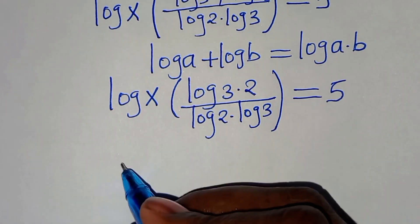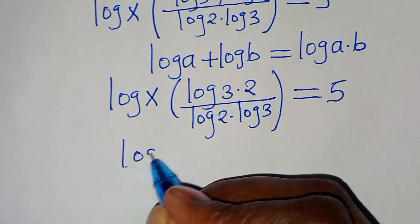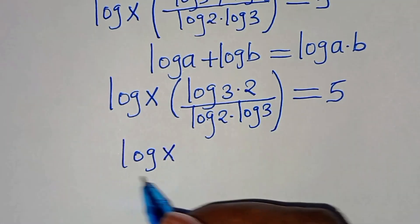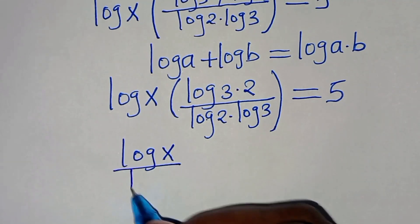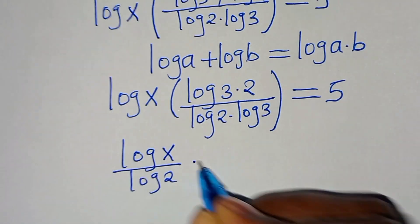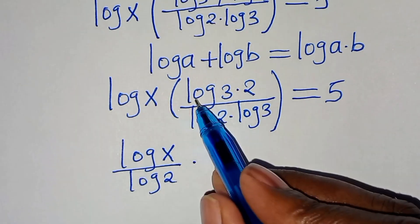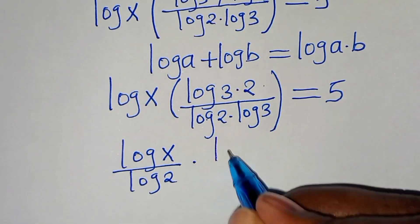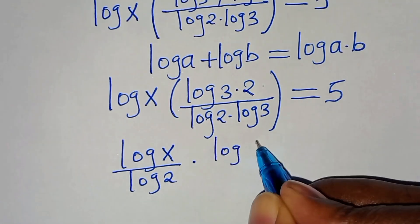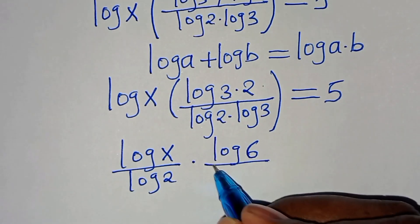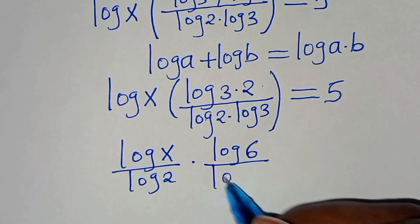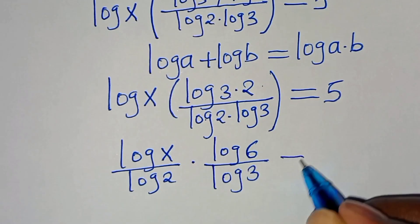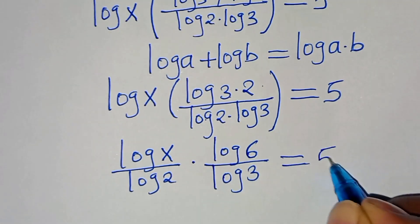The next step: we have log x divided by log 2, multiplied by log 6 divided by log 3. This equals 5. Now applying the change of base property, log x over log 2 is log base 2 of x, and log 6 over log 3 is log base 3 of 6.